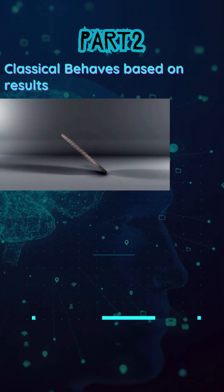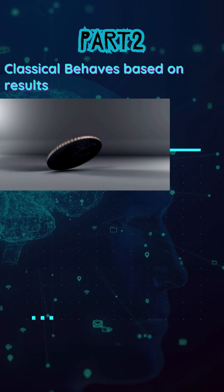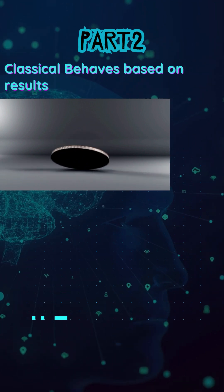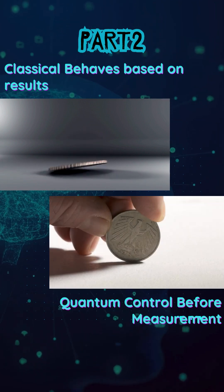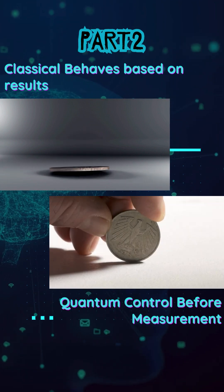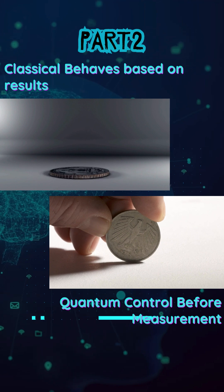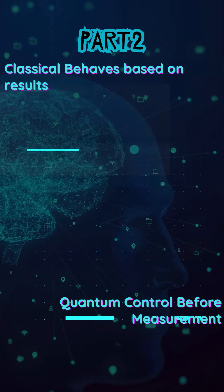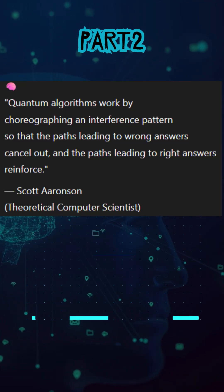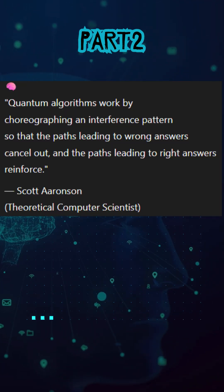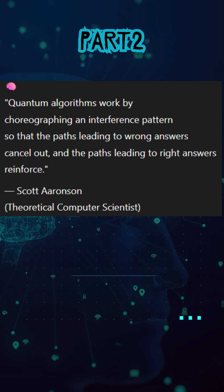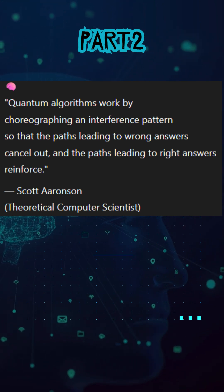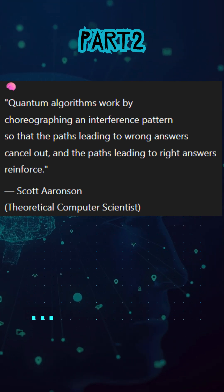Here's the interesting part. In a classical computer, we only use the final result — when the coin lands. But in a quantum computer, we can actually do things to the coin while it's still spinning. We can nudge it, tilt it, influence it before it lands. That's what gives quantum computers their special power.